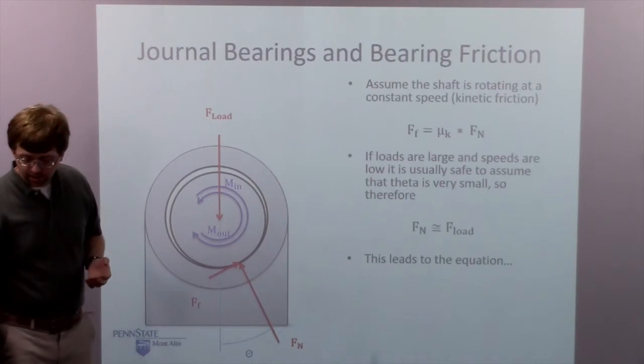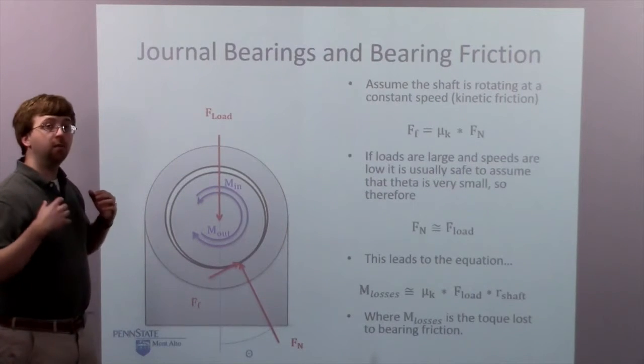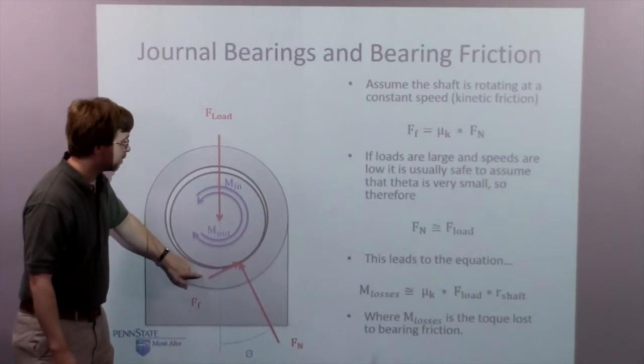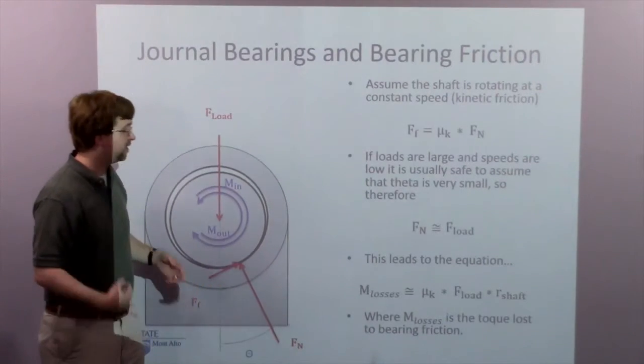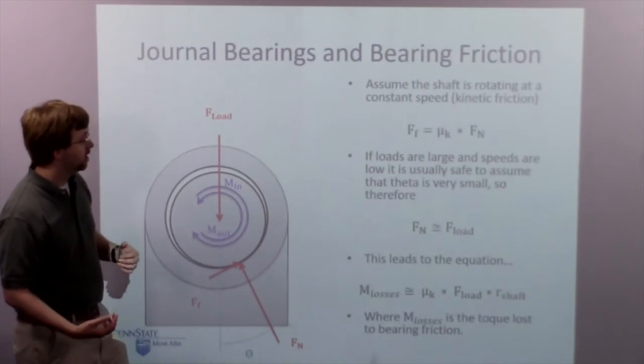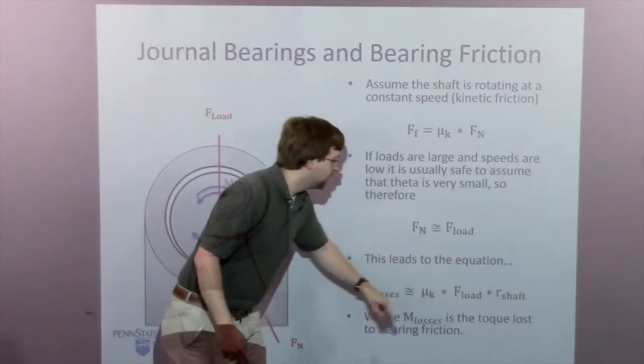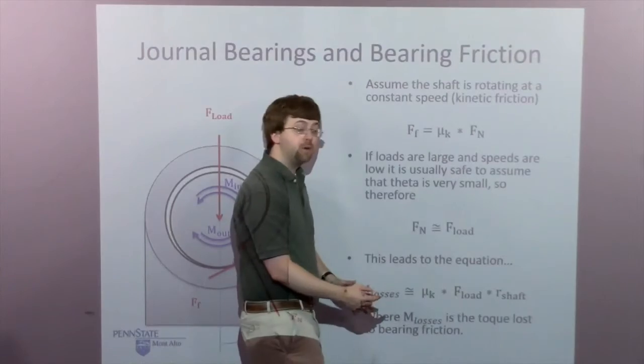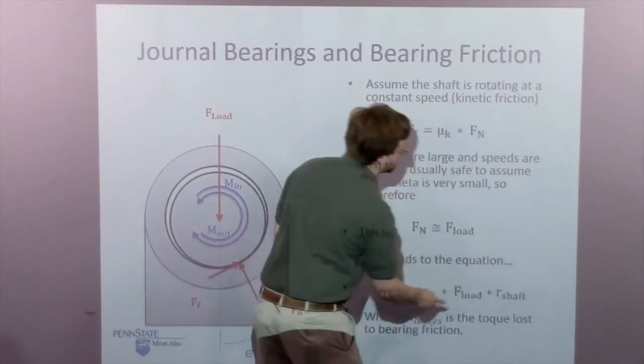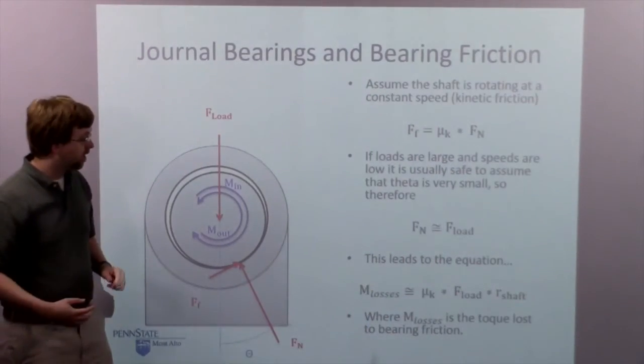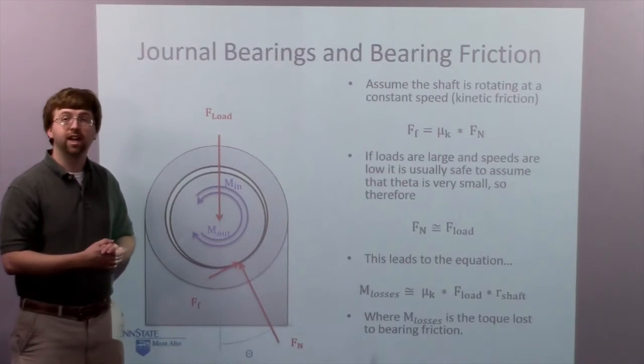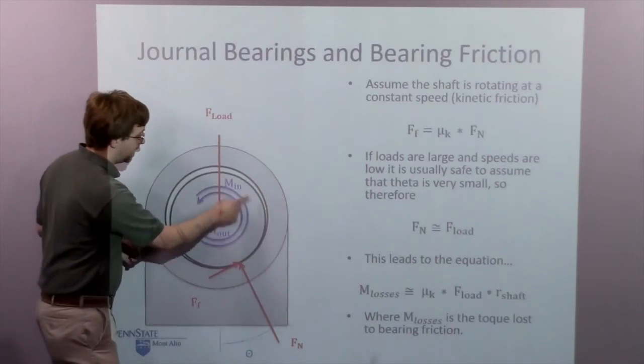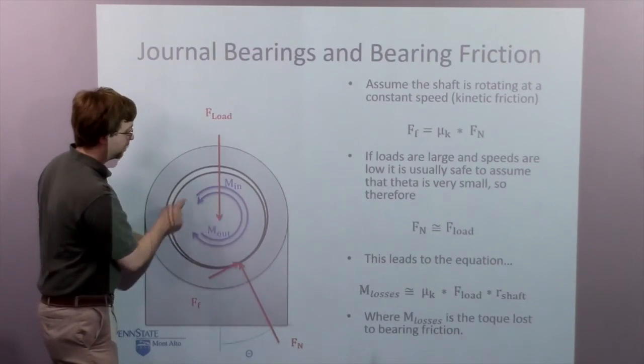This leads to the equation - the moment that I lose to this friction force is equal to the kinetic coefficient of friction times the load force. That is the friction force, and the moment R is the radius of the shaft itself. So this moment that I lose due to the bearing is the difference between my input torque and my output torque. I want to minimize this moment loss in most bearings.